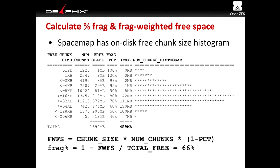We multiply the size buckets by chunk counts to get free space per bucket — for example, 12 megabytes of free space in 256K chunks, 200 megabytes in 128K chunks. We then have a statically-defined table that says: if chunks are one kilobyte, that's 100% fragmented; if chunks are 128 kilobytes, that's 50% fragmented; zero percent fragmented is one megabyte and larger.